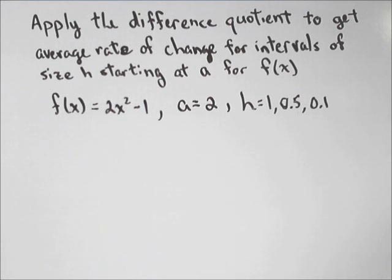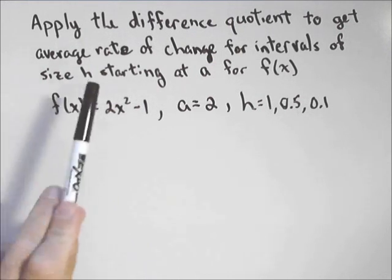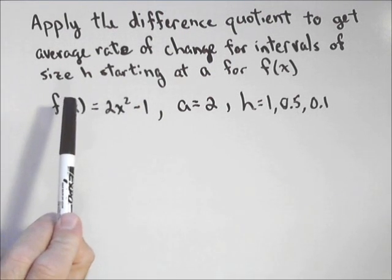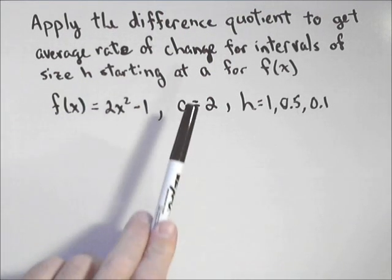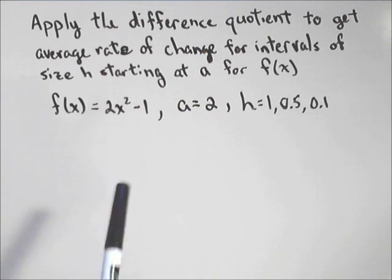In this video, we're going to talk about applying the difference quotient. In this case, we're going to talk about using it to get an average rate of change for various intervals of size h, starting where the interval starts at some value a for some function.